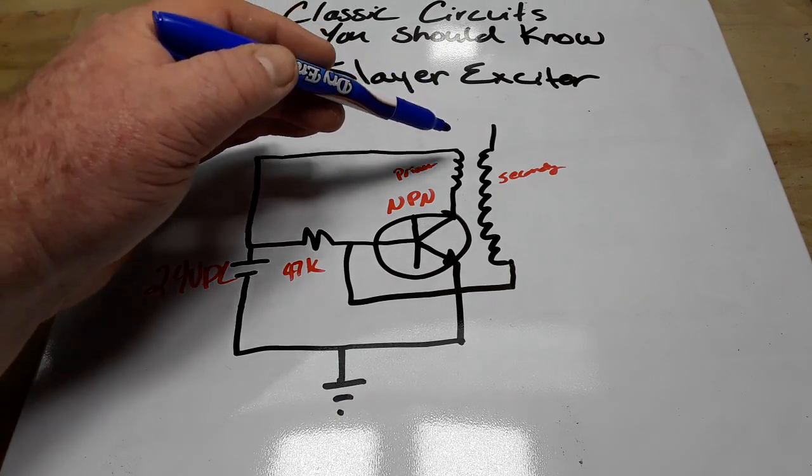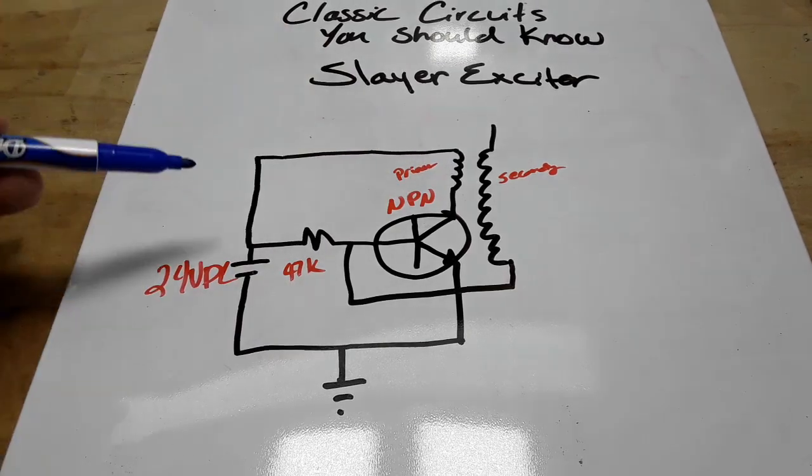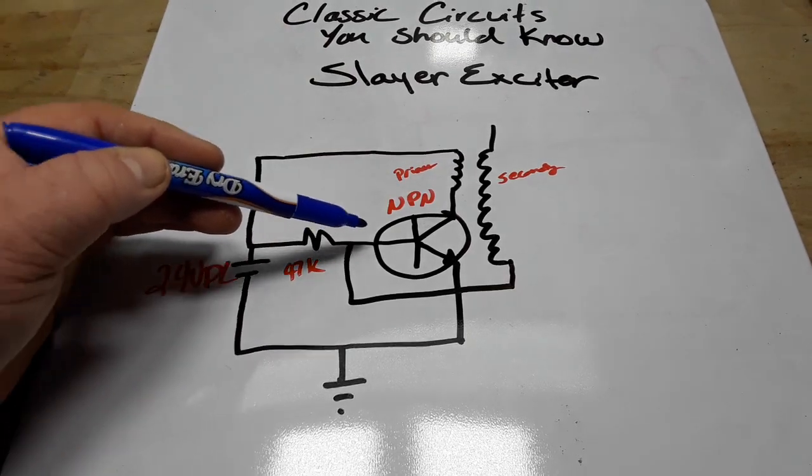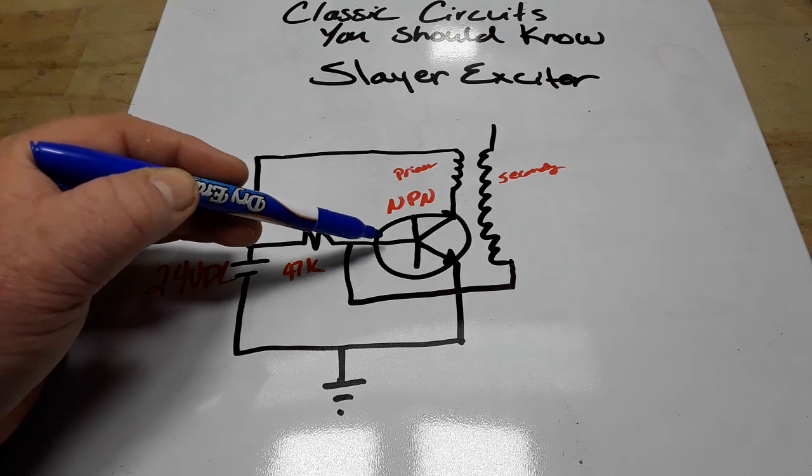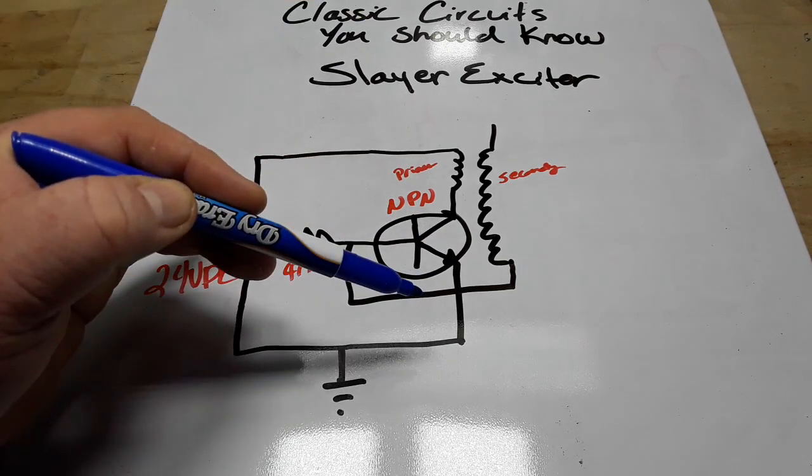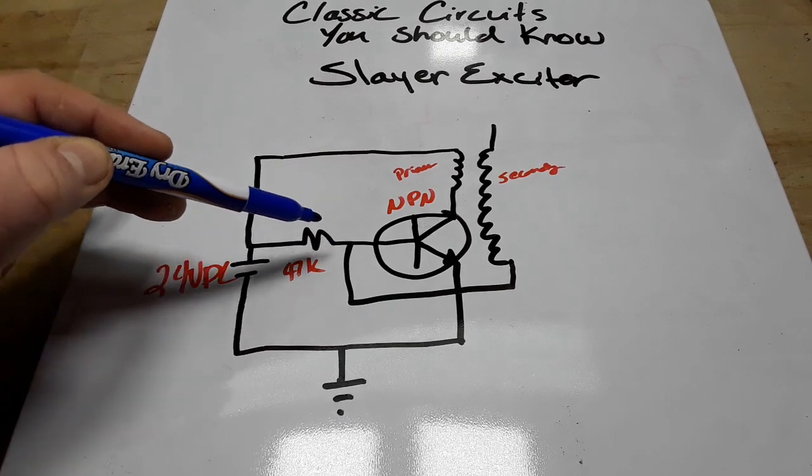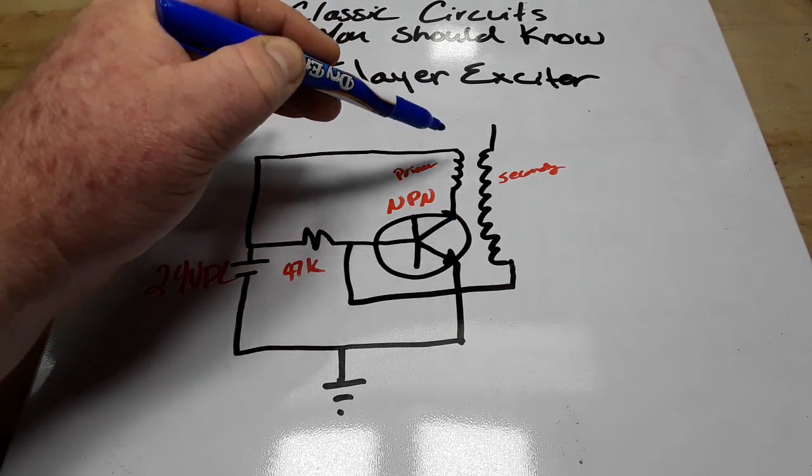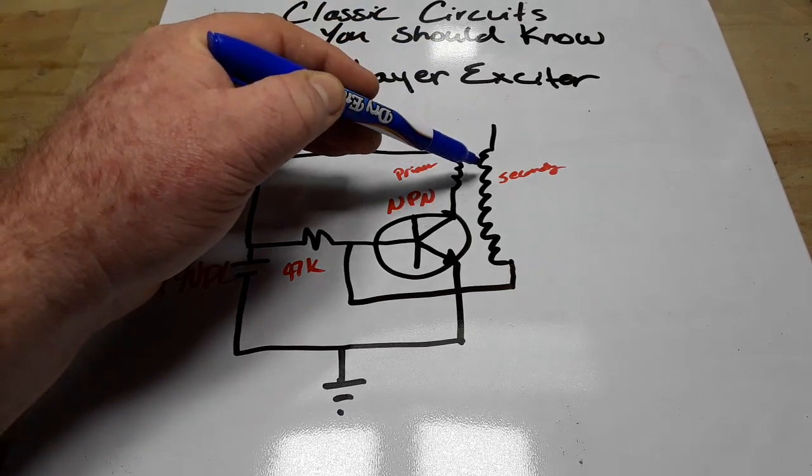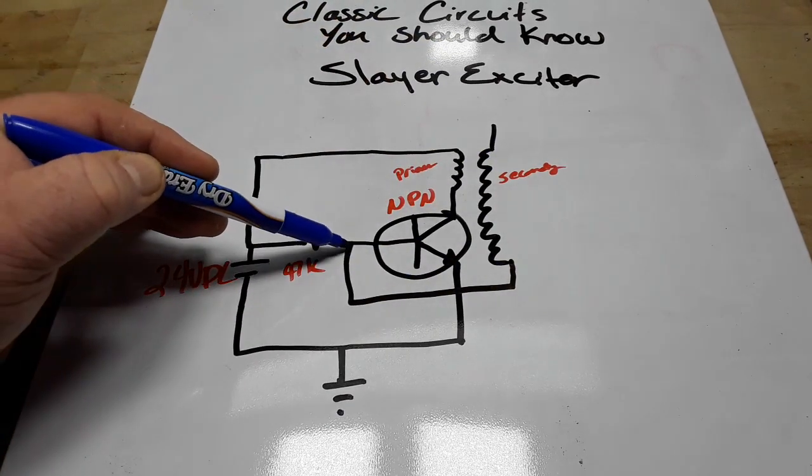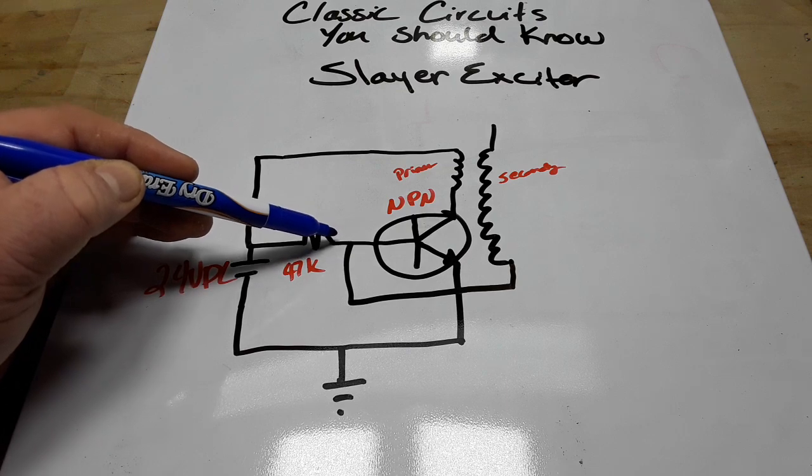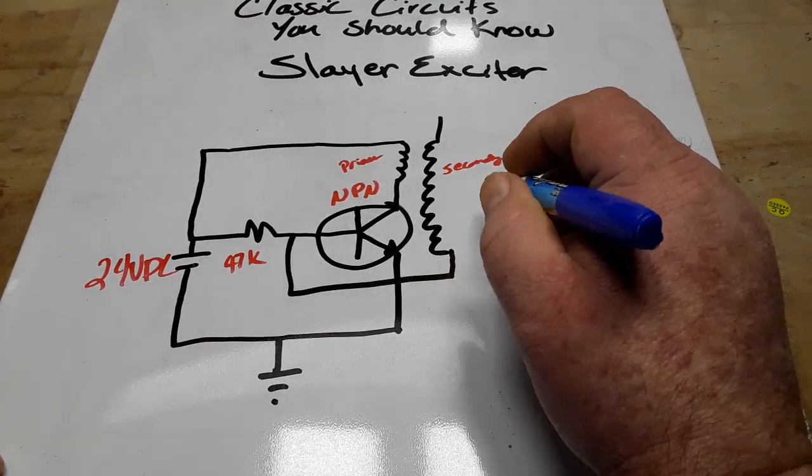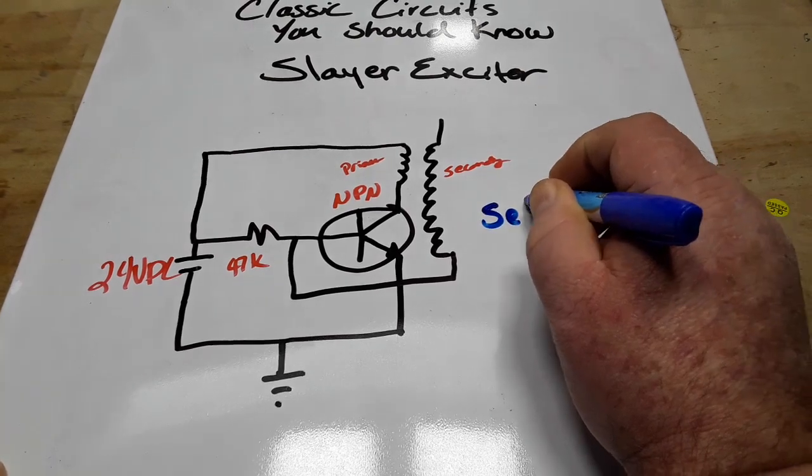It comes in and charges the primary coil. At the same time it comes in here to the base, opens this up, lets it flow. Now as that happens, the coil dumps its energy which picks it up over here, comes over here and shuts that off. And it does the magic of this circuit which is self resonating.